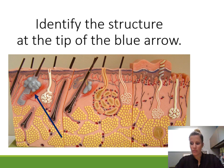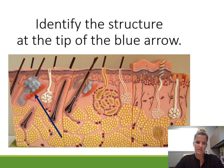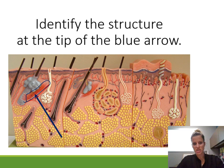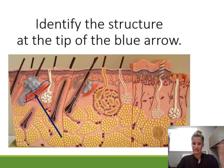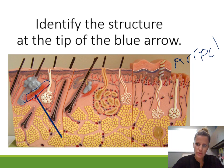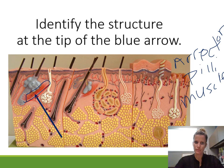Identify the structure at the tip of the blue arrow. Now changing gears from the skeletal system to the integumentary system. This is pointing to the muscle attached to the hair follicles. When it contracts, it makes the hair stand up on end and gives you goosebumps. That is the arrector pili muscle.